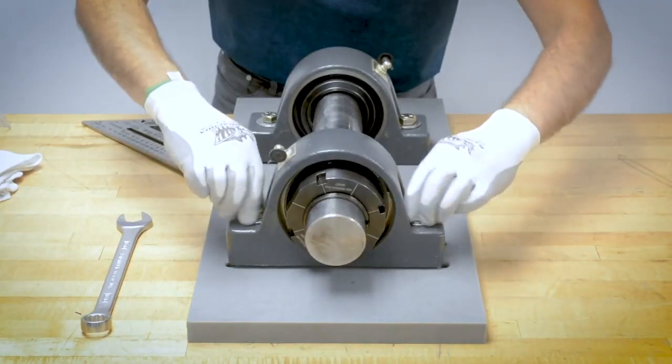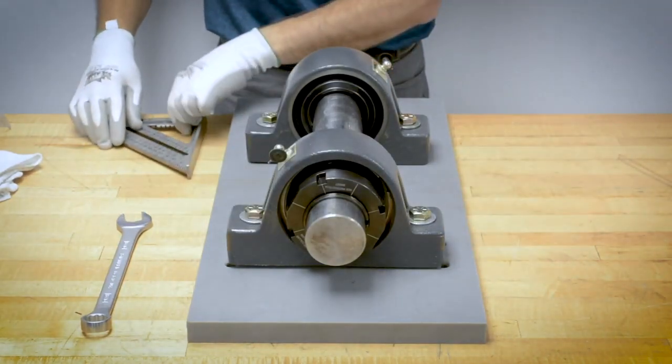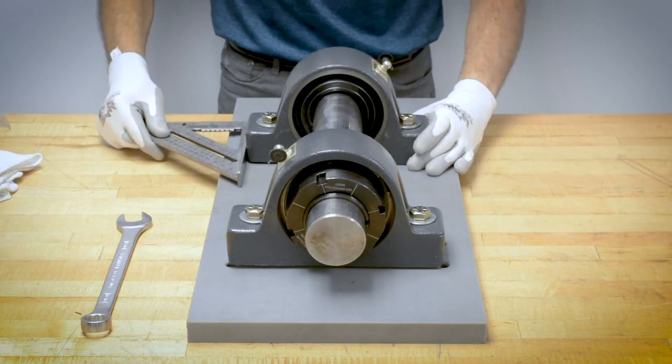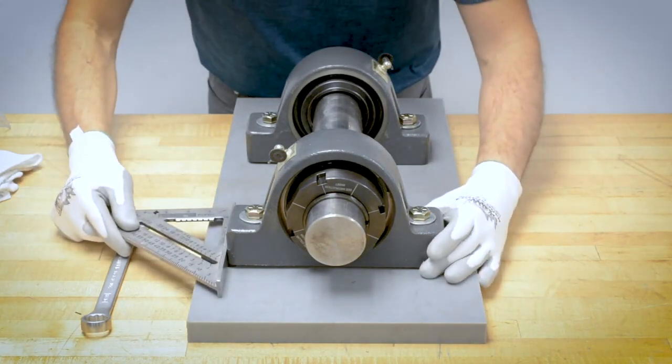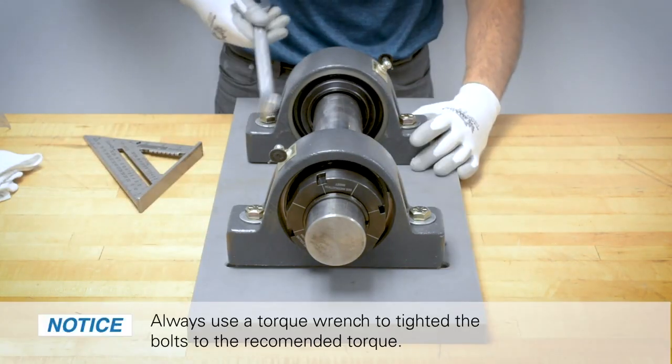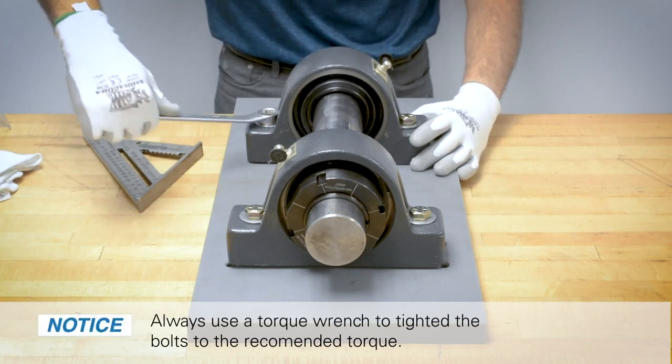Once you have the bearings on the shaft, insert but do not tighten the mounting bolts. Align the bearings to the shaft. Once completed, tighten the housing bolts to the recommended fastener torque.